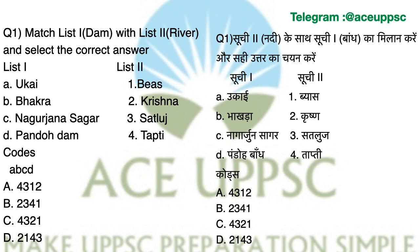Ukai Dam is on the Tapti River in Gujarat. Bhakra Dam is on the Sutlej River in Himachal Pradesh. Nagarjuna Sagar Dam is on the Krishna River in Andhra Pradesh and Telangana. And Pandoh Dam is on the Beas River in Himachal Pradesh. So Question 1 answer is C: 4, 3, 2, 1.